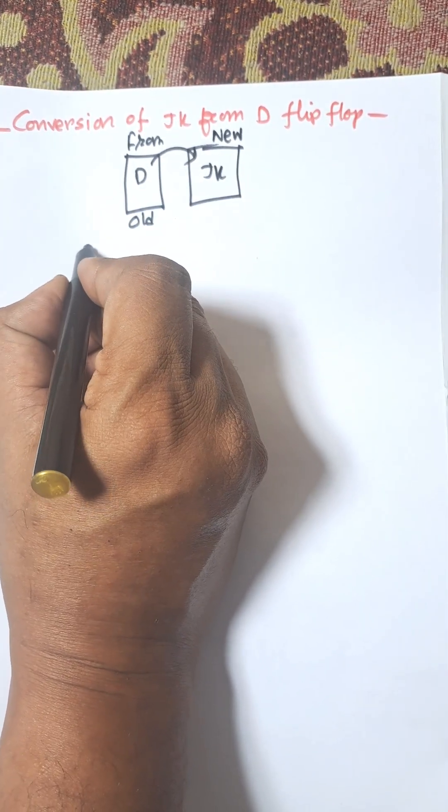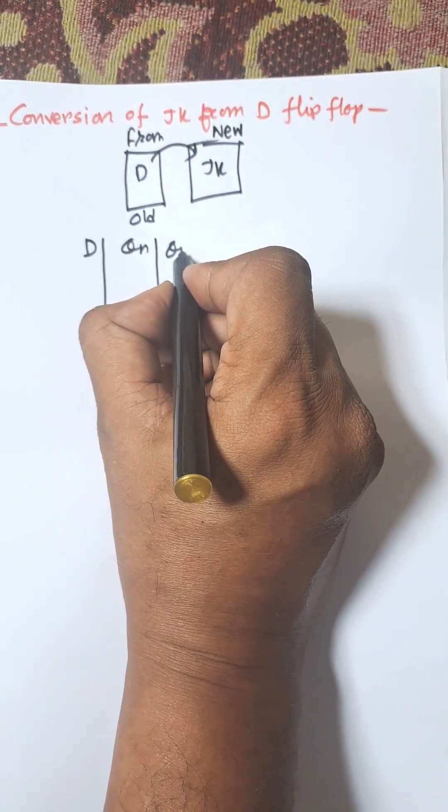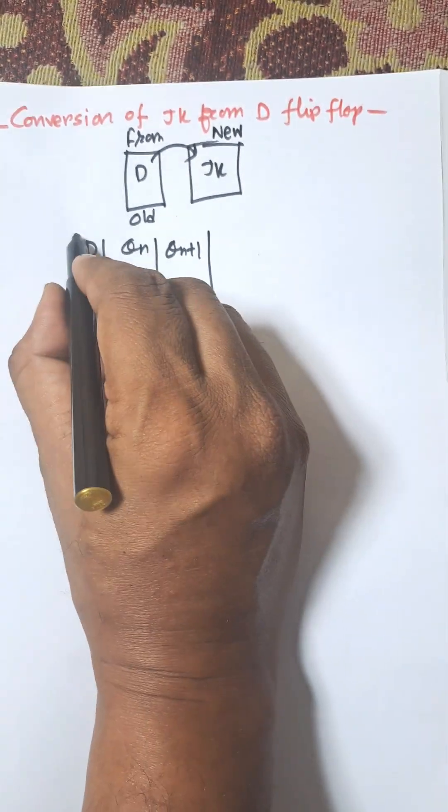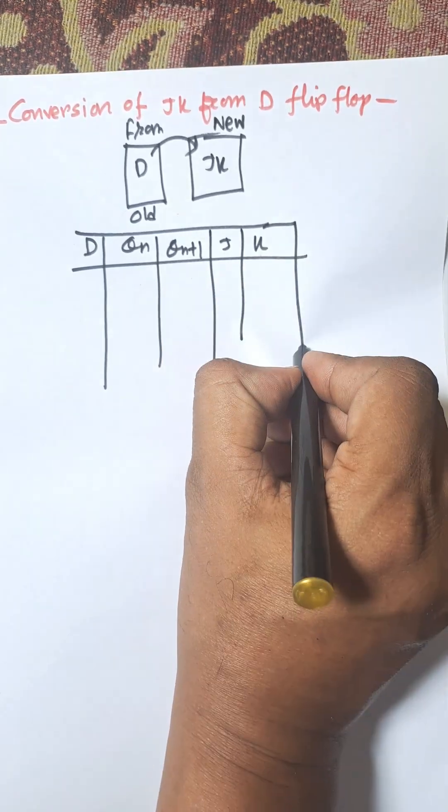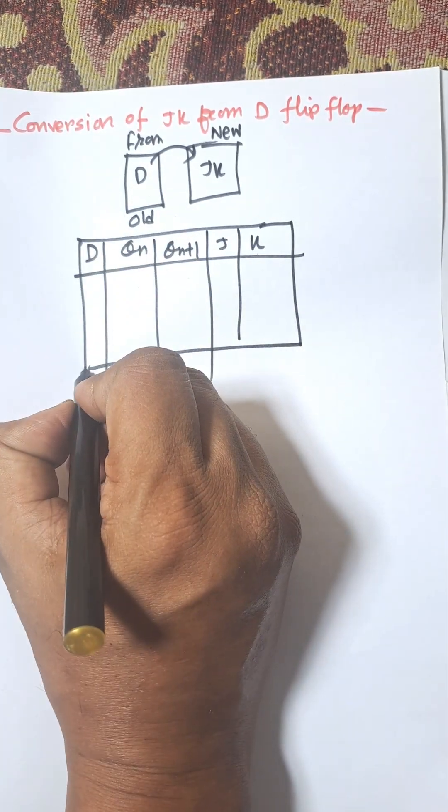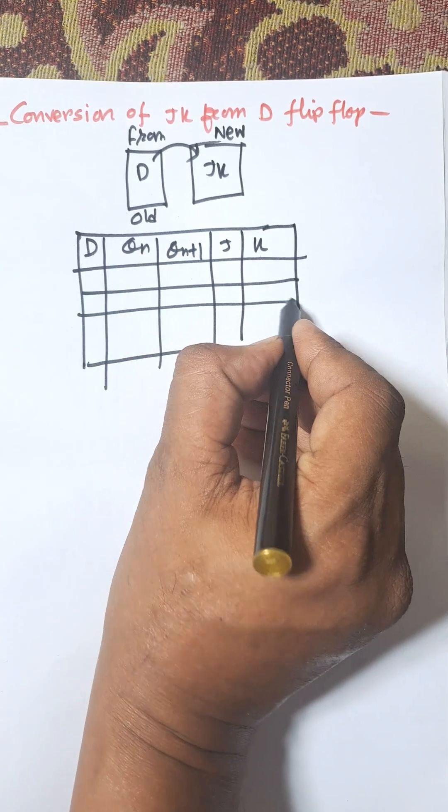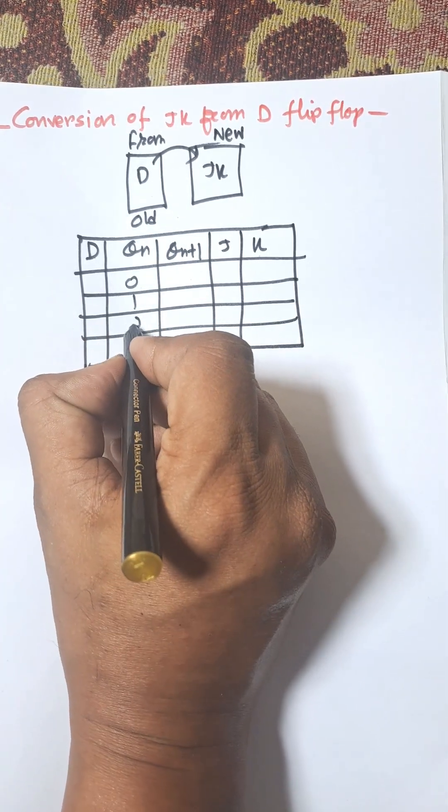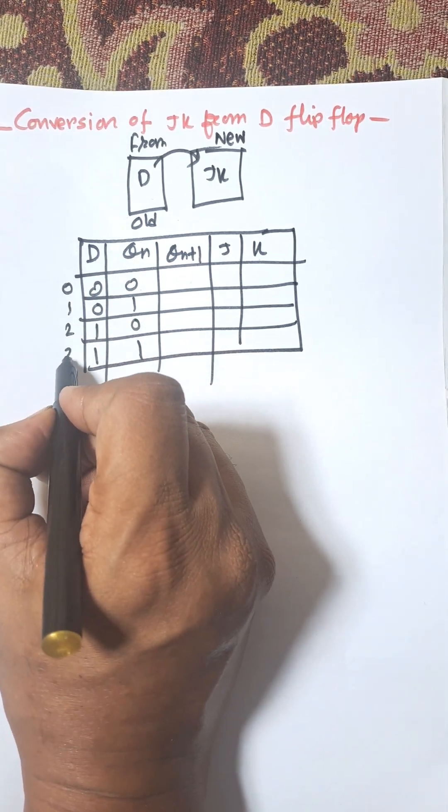First of all the table contains D input and as Qn, Qn plus 1, present state, next state, and next one is JK. JK is the flip-flop input. Now there are two combinations D and Qn, so there will be four rows: 0 1, 0 1, 0 0, 1 1. This is for 0, 1, 2, 3.